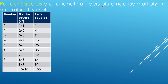Perfect squares are rational numbers obtained by multiplying a number by itself. So I have here numbers from 1 to 10, and getting the square of these numbers, the results here are all perfect squares. So it means 2 squared is 4, 3 squared is 9, or 5 times 5 is 25.